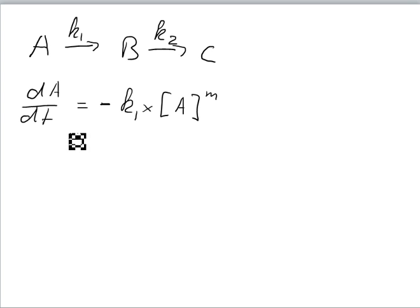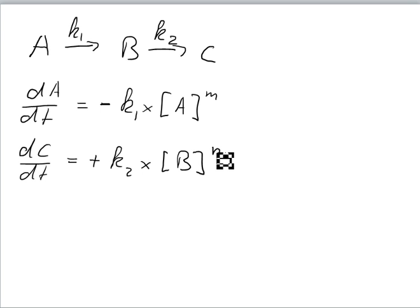Now for C it's also fairly simple to write the rate equation. dC over dt equals, we produce C, so it is plus k2 times concentration of B to the power of, let's call it, N.